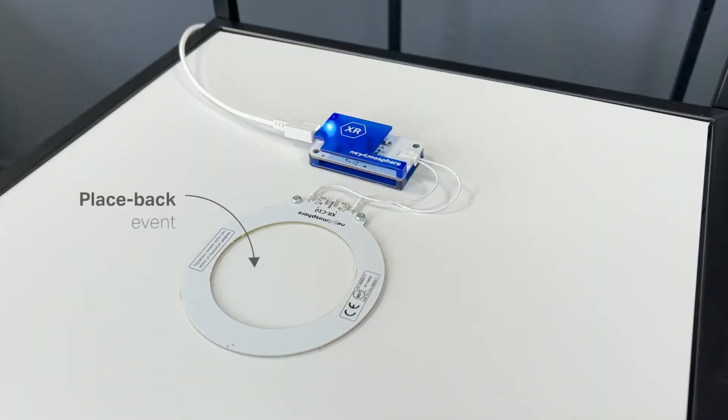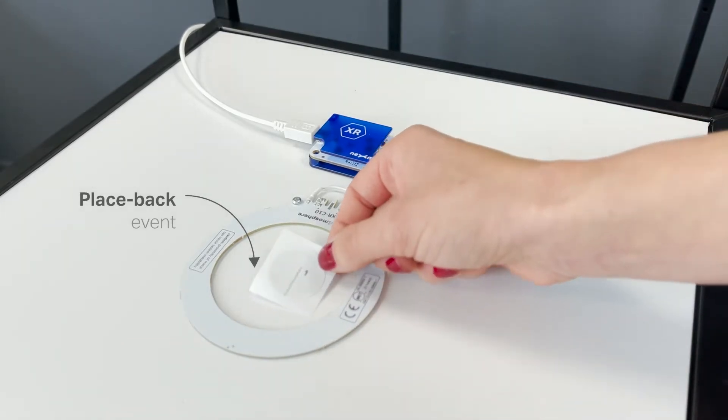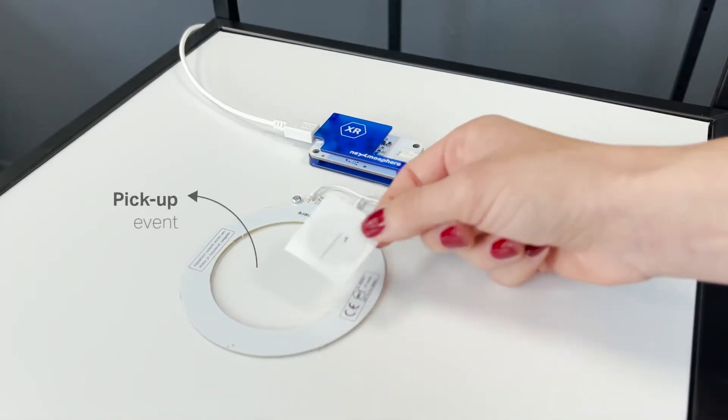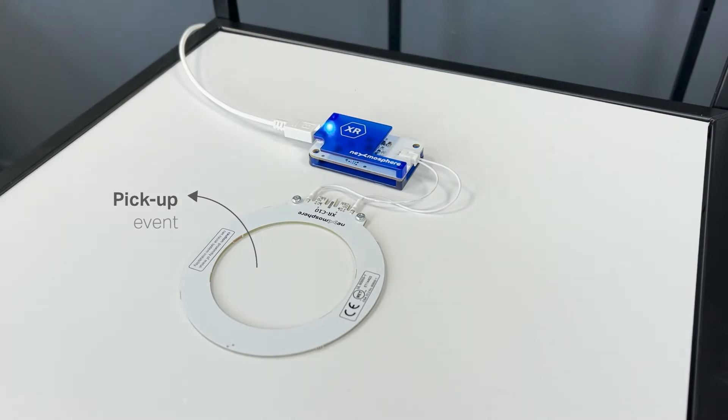When the tag is placed, this tag number is communicated as a place-back event, and when a tag is removed from the detection field, this is communicated as a pickup event. Both events can be used as a trigger to start new content on the connected media player.